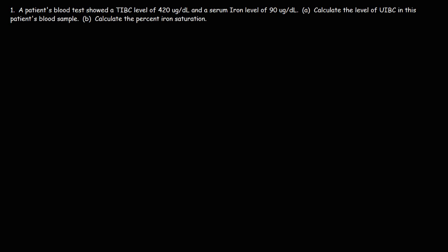So let's begin with this problem. Number one, a patient's blood test showed a TIBC level, that is the total iron binding capacity, of 420 micrograms per deciliter and a serum iron level of 90 micrograms per deciliter.